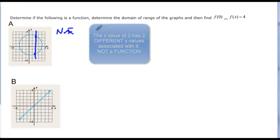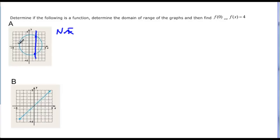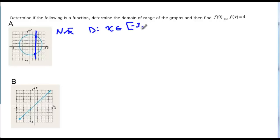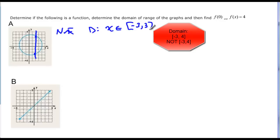Then we want to know what the domain is — all the possible x's, how far to the left, how far to the right. I usually use a capital D for domain, and then it's x is an element of what interval. Well, it goes from negative three over to positive three, and it doesn't go any further than that. The circle is no wider than that, but it includes those two points, so we say bracket, negative three to three, and it includes three.